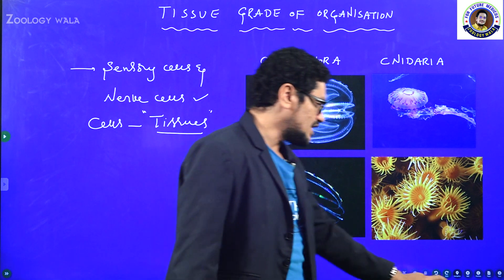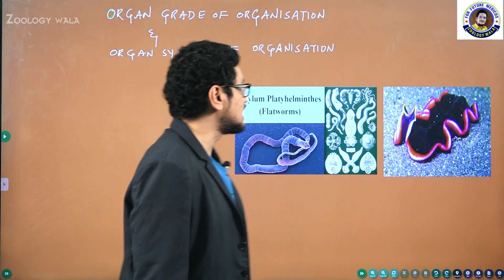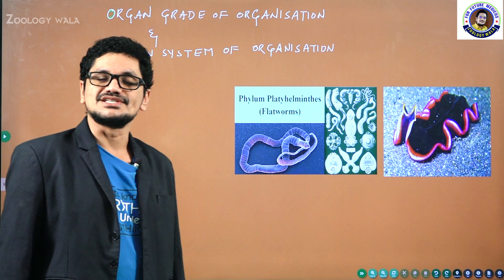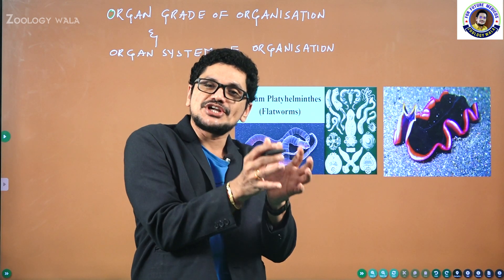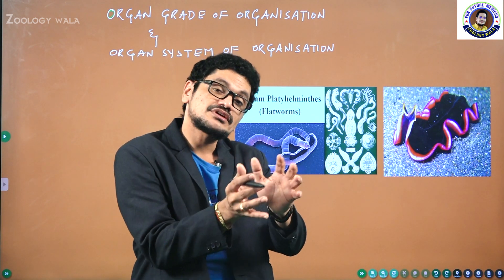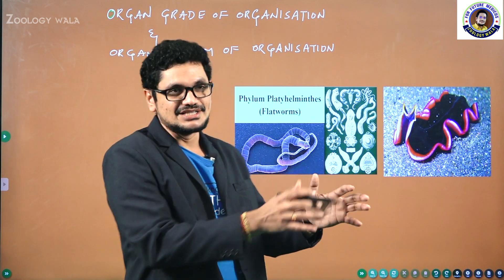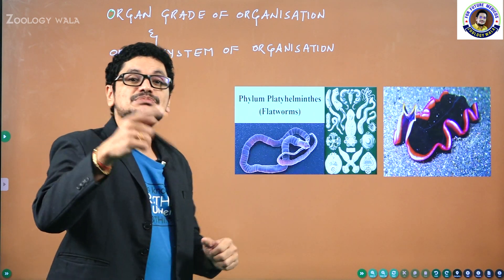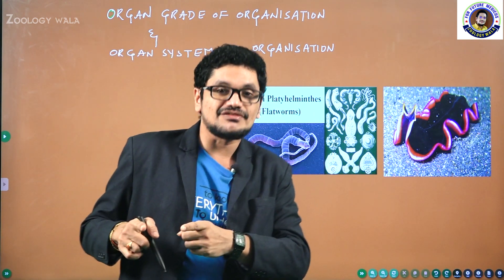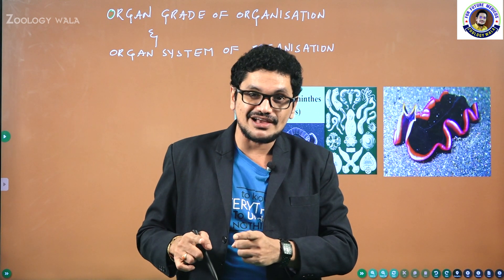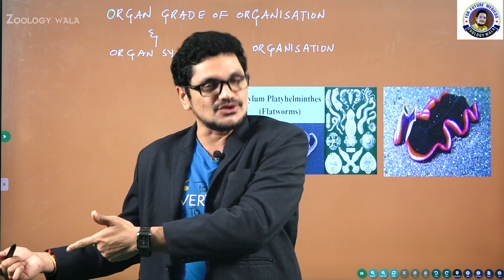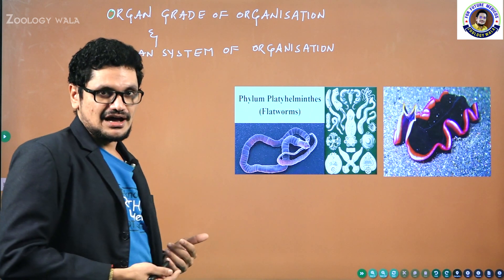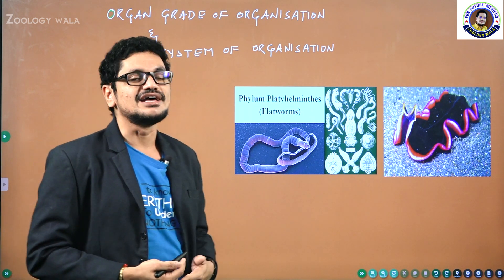Let us observe the next level of organization: the organ level of organization. Cells combine to form tissues, and tissues combine to form organs. The organ level of organization is more developed than the tissue level of organization, which in turn is more developed than the cellular level of organization.